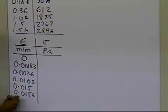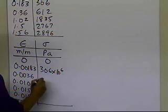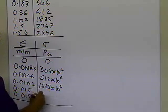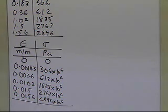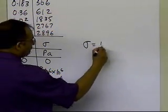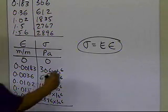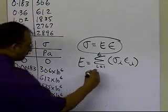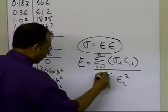Those are the strain values. Since the stresses are given in megapascals, I convert them into pascals: 0, 306×10⁶, 612×10⁶, 1835×10⁶, 2767×10⁶, and 2896×10⁶ pascals. Now, to find the Young's modulus, the regression model is σᵢ = E·εᵢ, and Young's modulus E equals the summation of σᵢ·εᵢ for i equals 1 to 6, divided by the summation of the square of each strain value, again summing all six values.